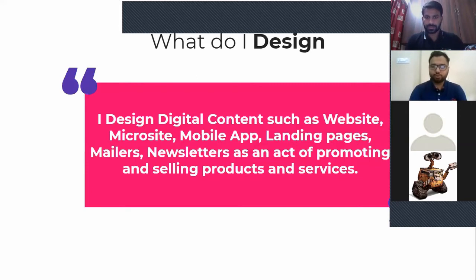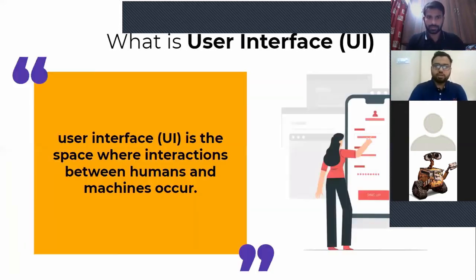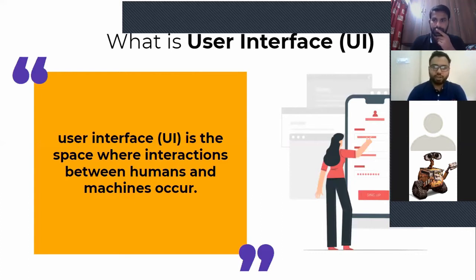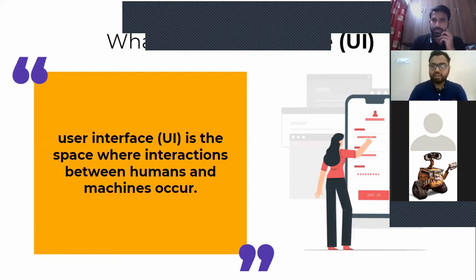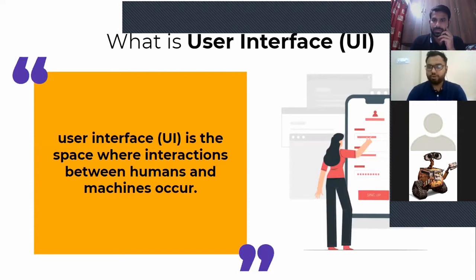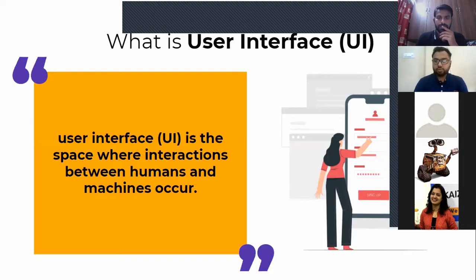So what is user interface? Whatever you are interacting with right now is a user interface. On your mobile, whatever you click on — that is a user interface. Whatever is visible on your screen is a user interface. But user interface is not just digital — the keyboard you use, the switchboard at your home, the remote of your TV — everything which you interact with and which gives you a reply is a user interface. If you click on your keyboard and the screen shows some action or reaction, that is the user interface.